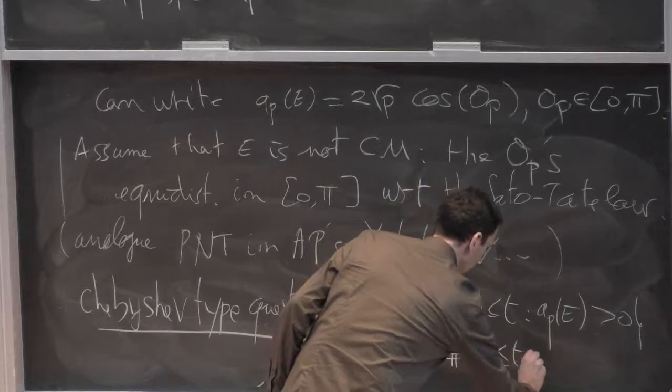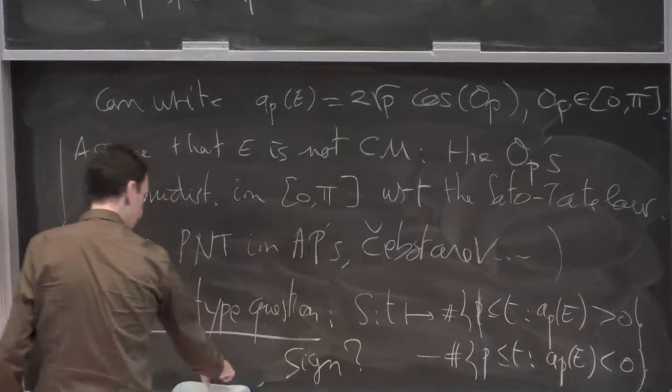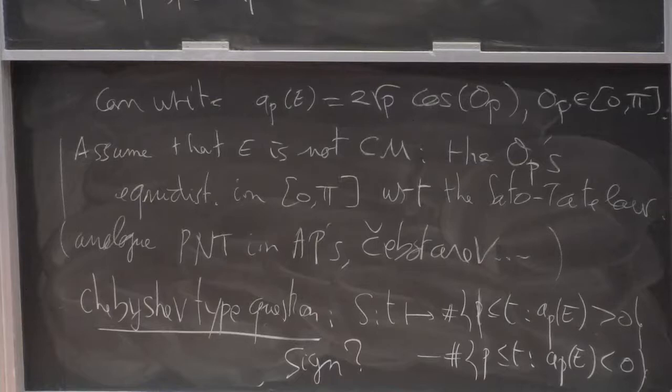minus mf prime up to t, that a_p is negative. So what's the sign of this function? This is a question that has been raised by Maser in his survey paper on the Selberg conjecture, published in the Bulletin of the AMS.